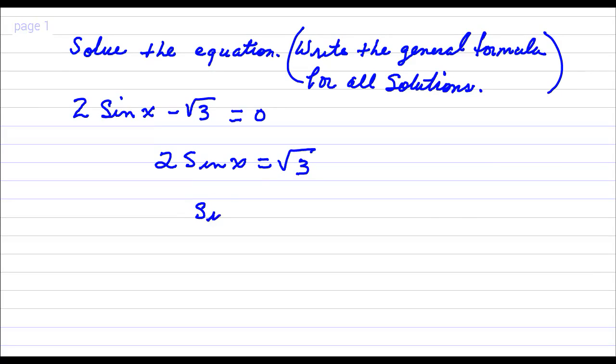So then I'm left with the sine of x is the square root of 3 over 2. Now, we're going to find the solutions between 0 and 2 pi.